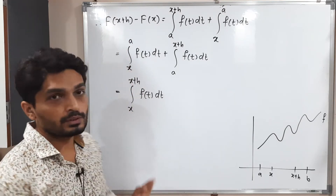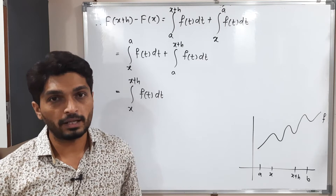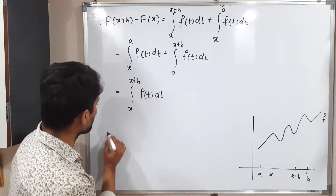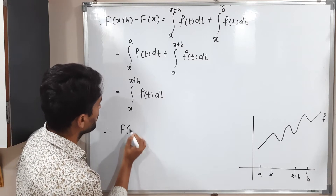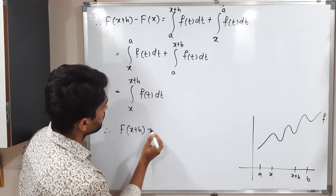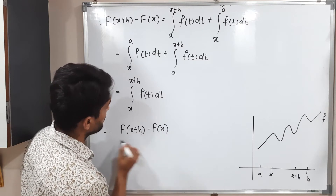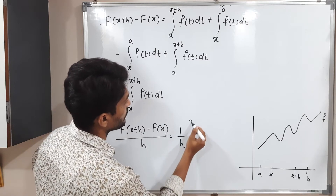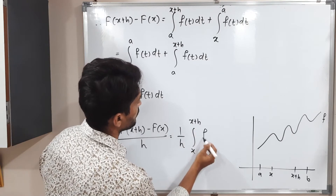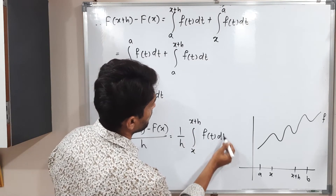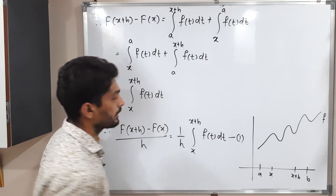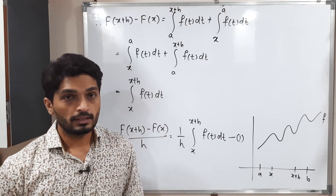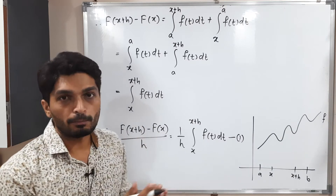We divide both sides by h, which is possible since h ≠ 0. This gives us: [F(x + h) − F(x)] / h = (1/h) ∫ₓˣ⁺ʰ f(t) dt. We call this Equation (1) — it is a very important equation that plays a significant role in our proof.